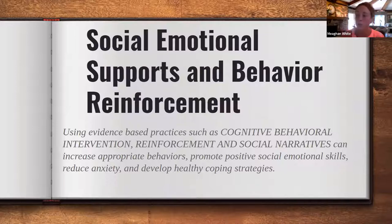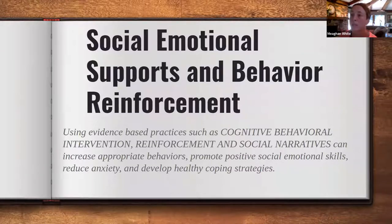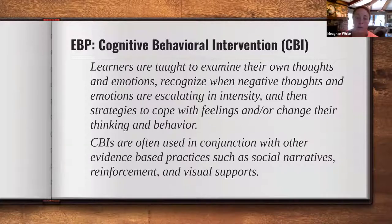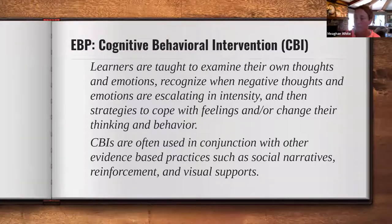Our next area is social-emotional supports and behavior reinforcement. We're going to look at examples of cognitive behavior intervention, reinforcement, and social narratives. Using these practices, we increase appropriate behaviors, promote positive social-emotional skills, reduce anxiety, and develop healthy coping strategies. The first evidence-based practice here is cognitive behavior intervention — strategies in which learners are taught to examine their thoughts and emotions, recognize when they're escalating, and then strategies to cope with these feelings or to change their thinking and behavior. These practices are often used in conjunction with other practices such as narratives, reinforcement, and visual supports.